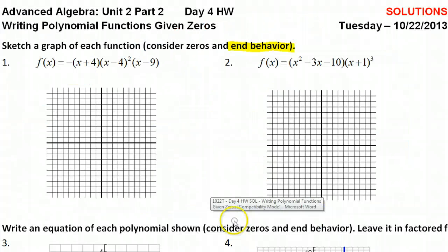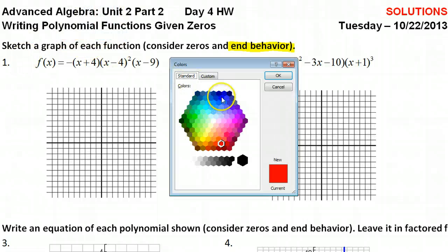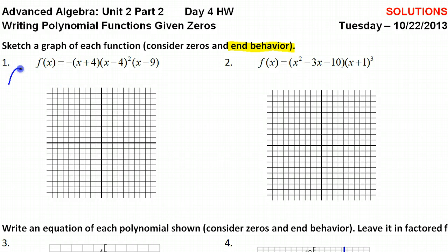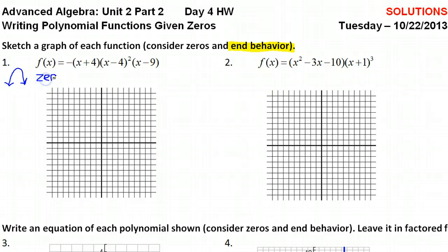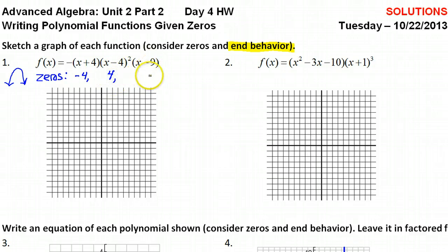Keep that in mind as we do this problem. I'm just going to make a tiny little sketch over here on the left to remind me — this is my end behavior sketch. It's even degree, it's negative, so the end behavior is: falls on the left, falls on the right. That'll come in handy later. Now as for the zeros, because of x plus 4, I have negative 4 as one of my zeros. Because of x minus 4, that's going to be positive 4. And because of x minus 9, it is going to be positive 9.